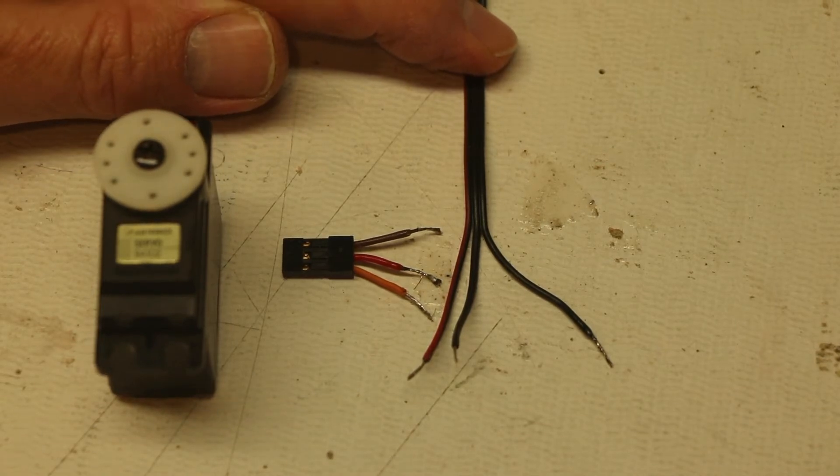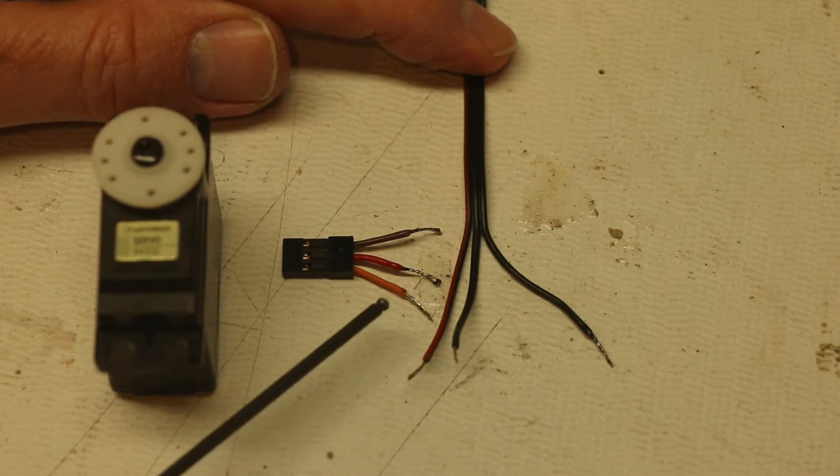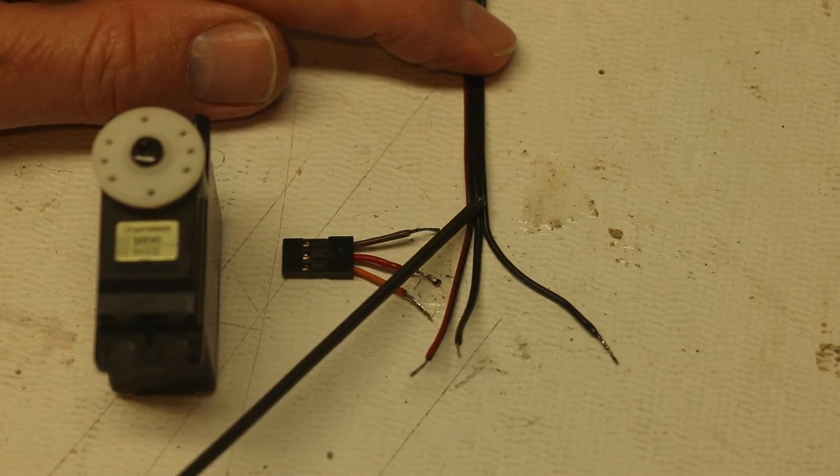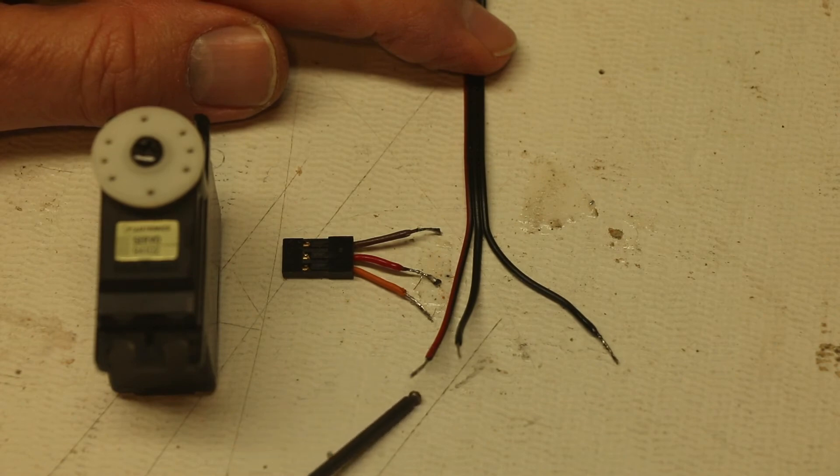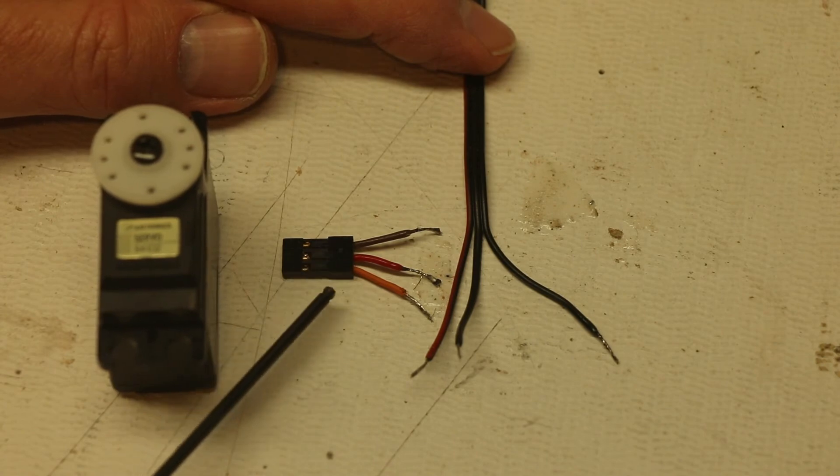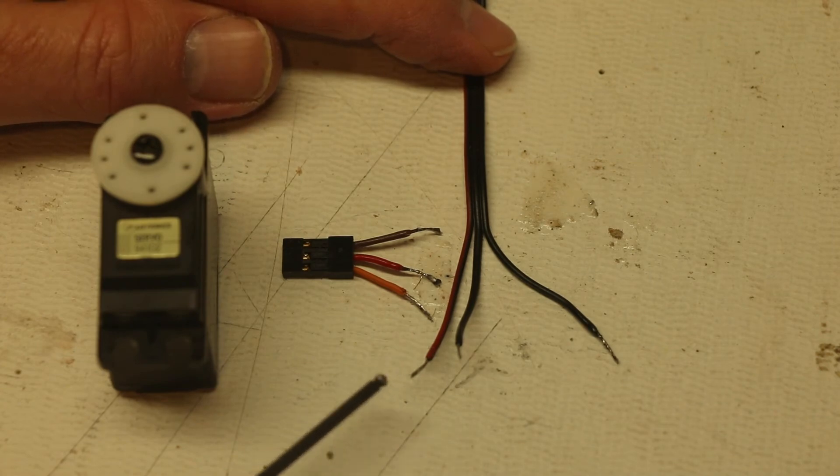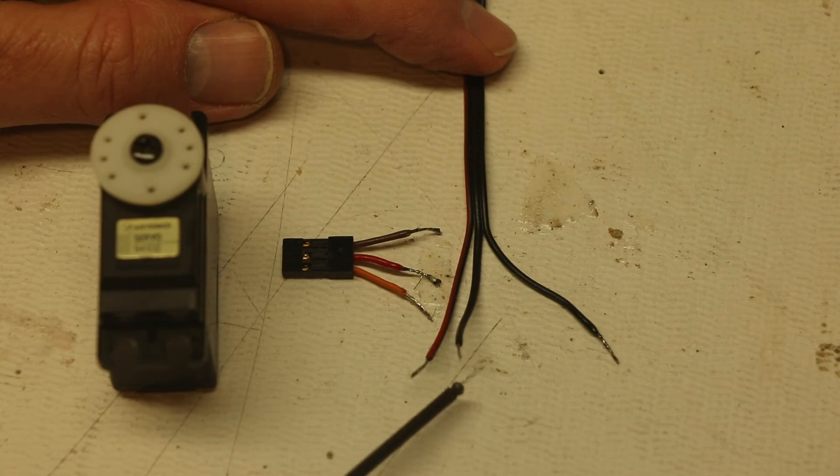Now the Airtronics servos that I have aren't as easy to read. They still have three wires but they have a red wire and two black wires. Now this new connector that I'm using has an orange, red and brown. So now the question is which one of these is signal.